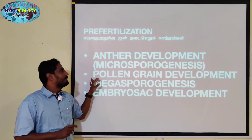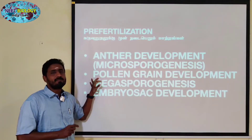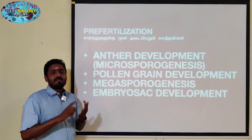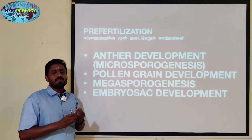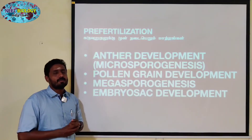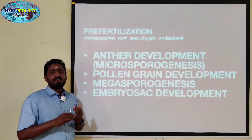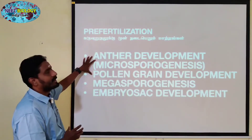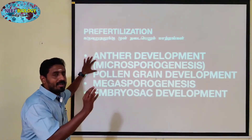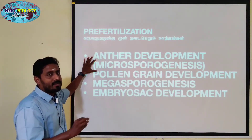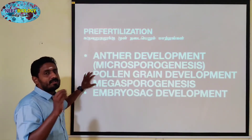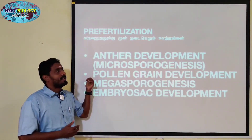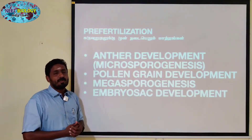This process is called pollen grain development, also referred to as anther development. Anther develops, then microsporogenesis occurs — that is, pollen grain development. After pollen grain development, the next stage is the pollination process.